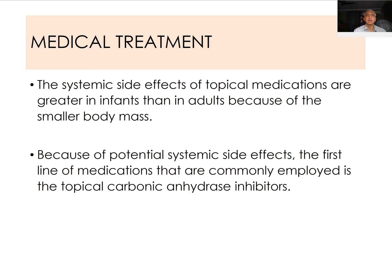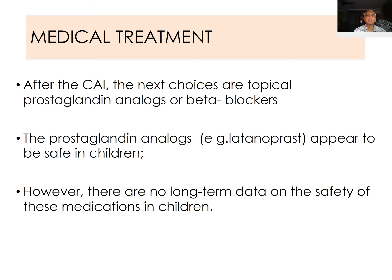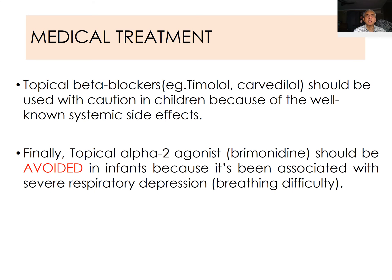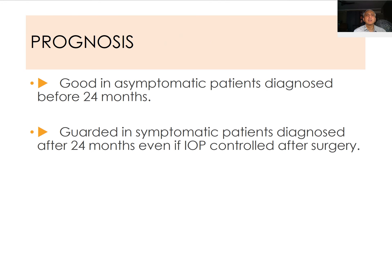Systemic side effects are very important in children due to smaller body mass. The first-line medications commonly employed are topical carbonic anhydrase inhibitors; next choices are topical prostaglandin analogs or beta-blockers. Prostaglandin analogs appear safe in children, though long-term data are lacking. Topical beta-blockers should be used with caution due to systemic side effects such as asthma and bradycardia. Topical alpha-2 agonists such as brimonidine should be avoided in infants because of associated severe respiratory depression.